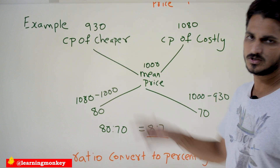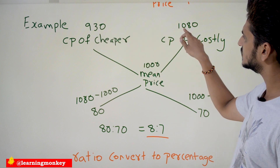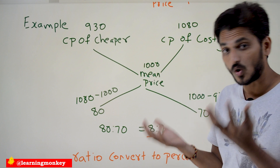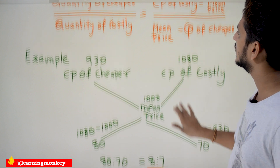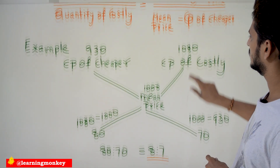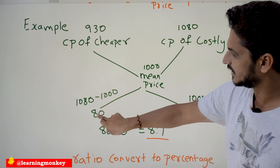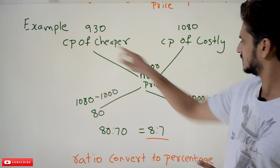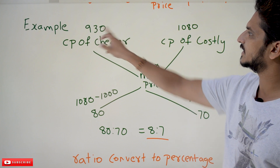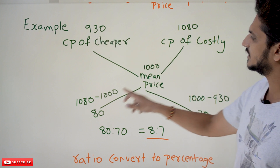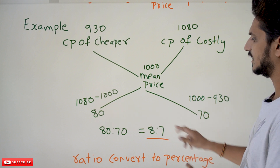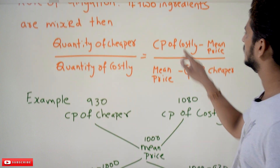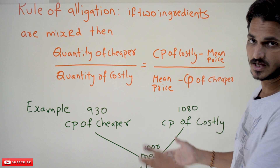Let's apply the formula to our example. Cost price of cheaper = ₹930, cost price of costly = ₹1080, mean price = ₹1000. Cost price of costly minus mean price = 1080 − 1000 = 80. Mean price minus cost price of cheaper = 1000 − 930 = 70. So the ratio is 80 : 70, written in diagrammatical form — this is the allegation rule applied.